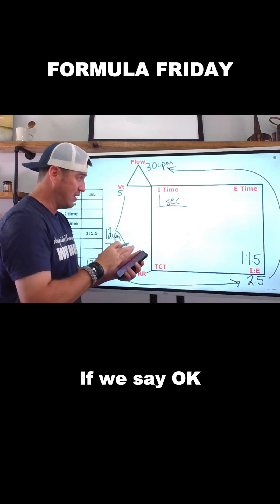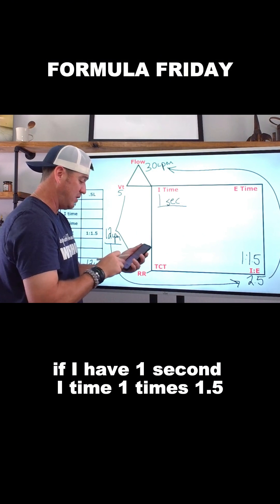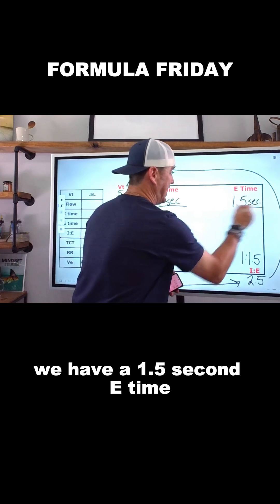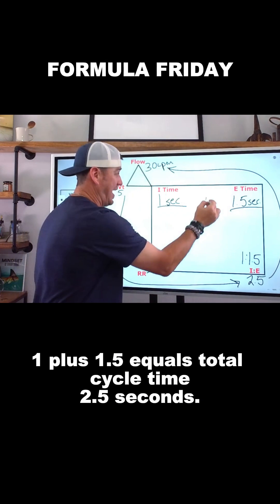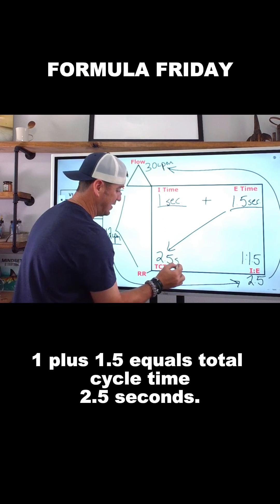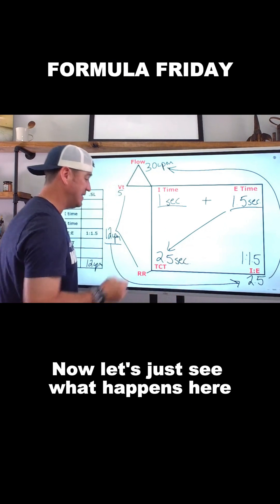If we say, okay, if I have a 1 second I time, 1 times 1.5, we have a 1 and a half second E time. 1 plus 1 and a half equals total cycle time 2.5 seconds.